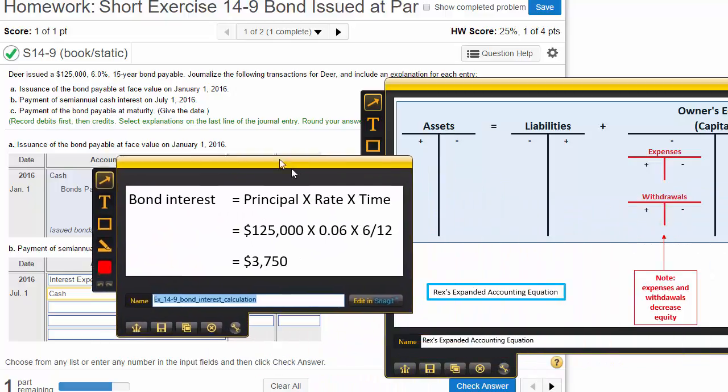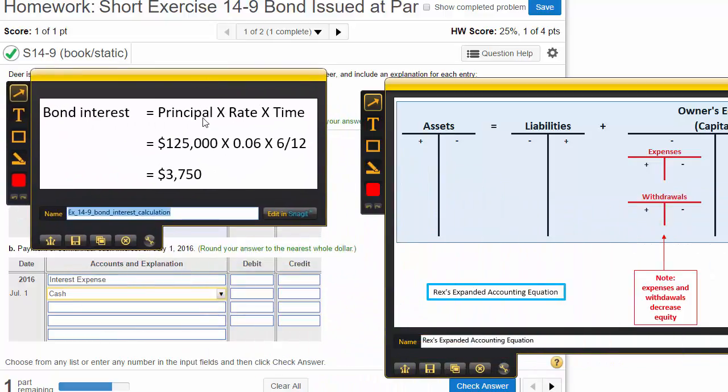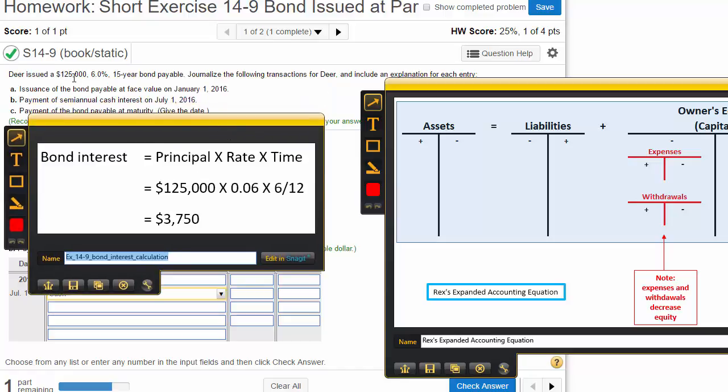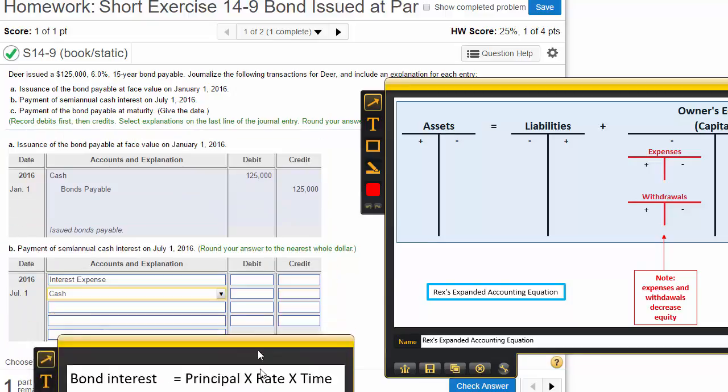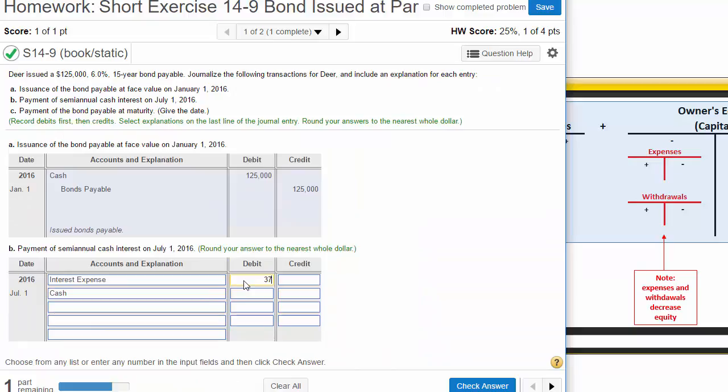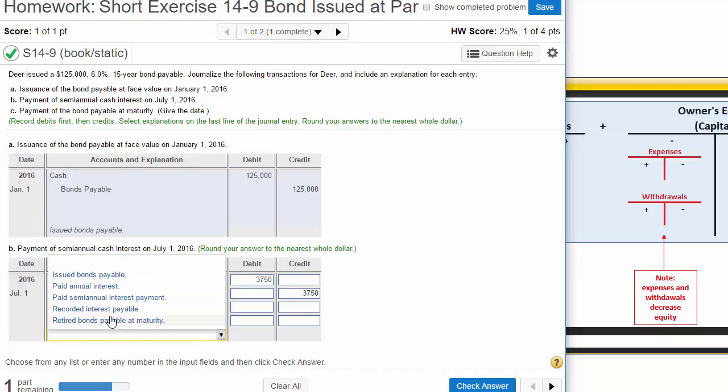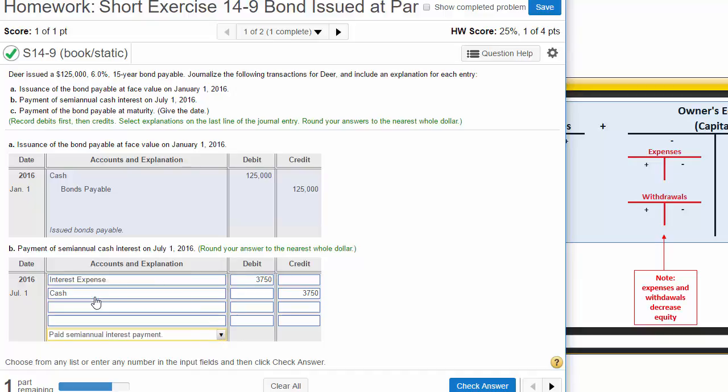The formula for bond interest is principal times rate times time. Our bonds were $125,000, that's the principal, and they're 6% bonds. Multiply that by six, and the interest is paid every six months, so times six divided by 12 gives you $3,750. Paid semi-annual interest payment.